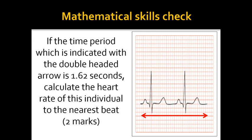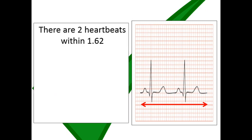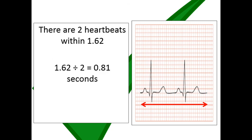The entirety of that diagram represents 1.62 seconds and shows exactly two heartbeats. Calculate the heart rate per minute to the nearest beat — pause me now. In 1.62 seconds there are two heartbeats, so one heartbeat is on average 0.81 seconds. There are 60 seconds in a minute, so 60 divided by 0.81 gives a heart rate of 74 beats per minute.